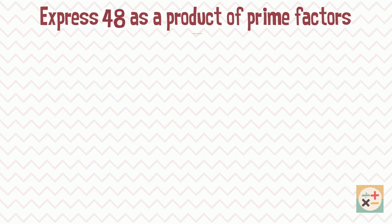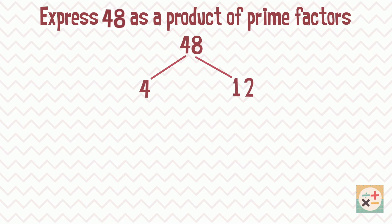Firstly, at the top of the tree we write the number — in this case 48. Then we create two branches and split the number into two of its factors. Here we have chosen 4 and 12, as when we multiply these together we get 48.